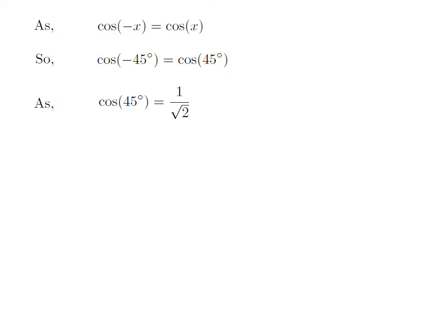We know the value of cosine of 45 degrees is equal to 1 upon square root of 2. So, we get the value of cosine of minus 45 degrees is equal to 1 upon square root of 2.